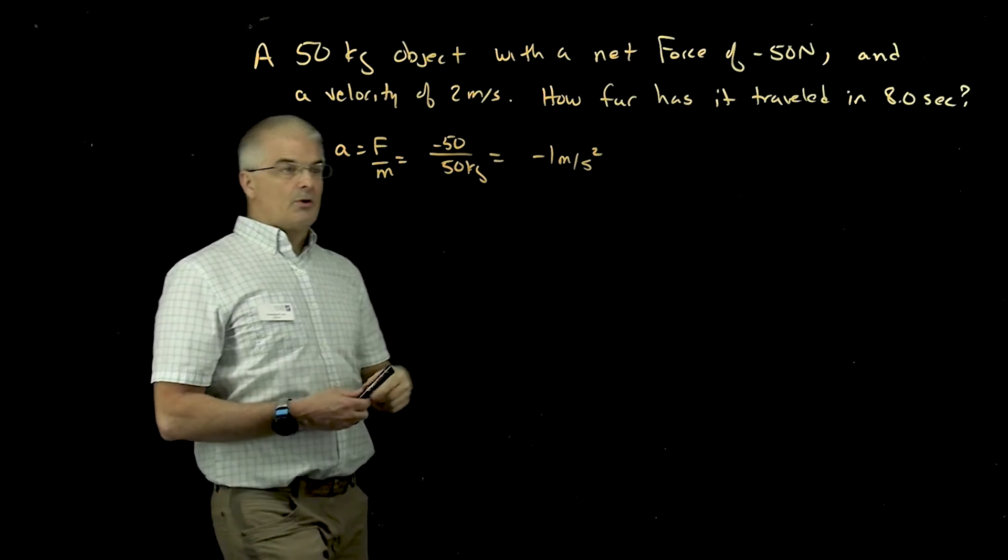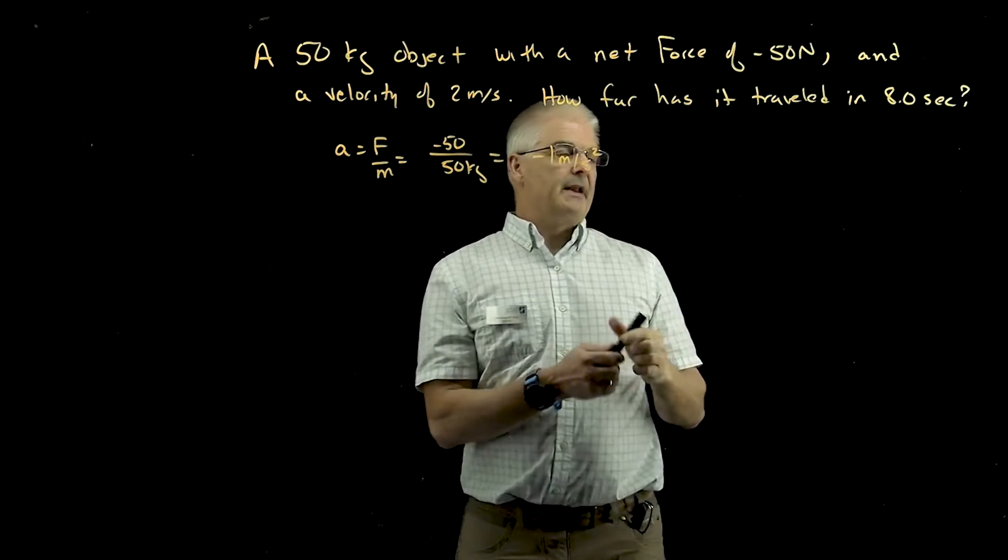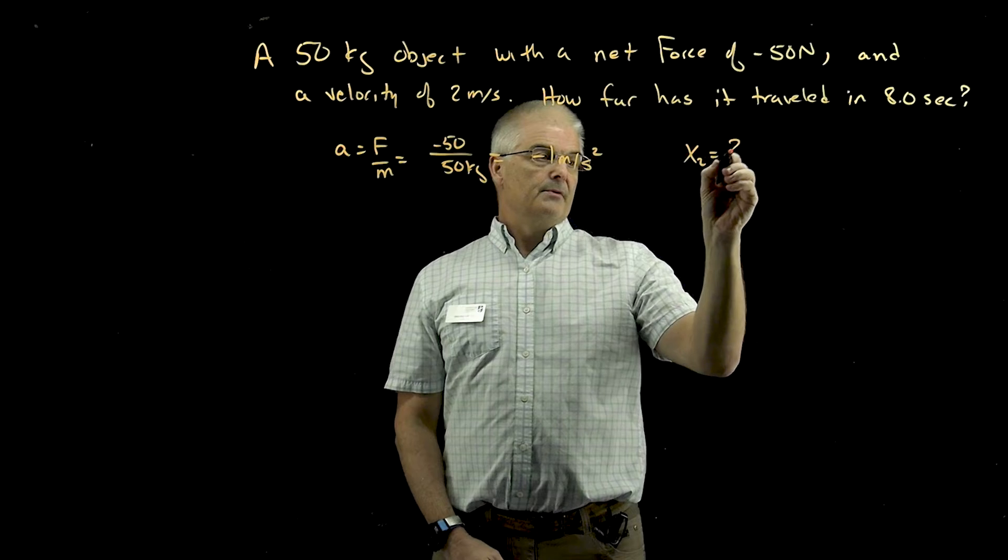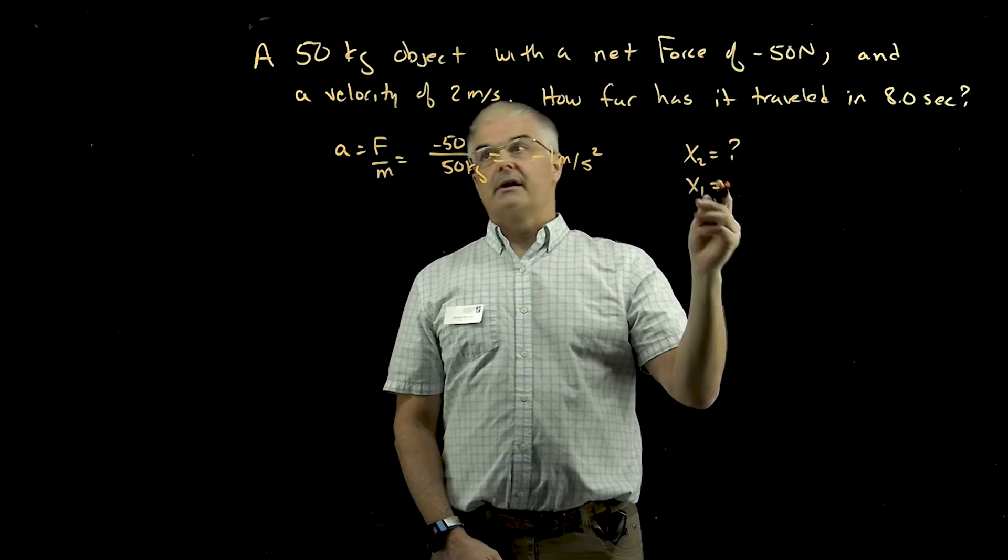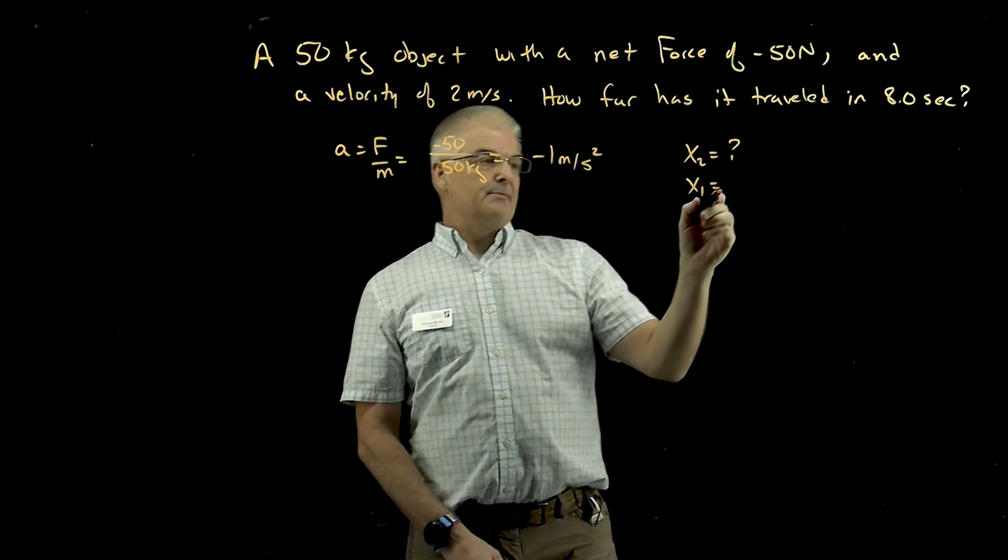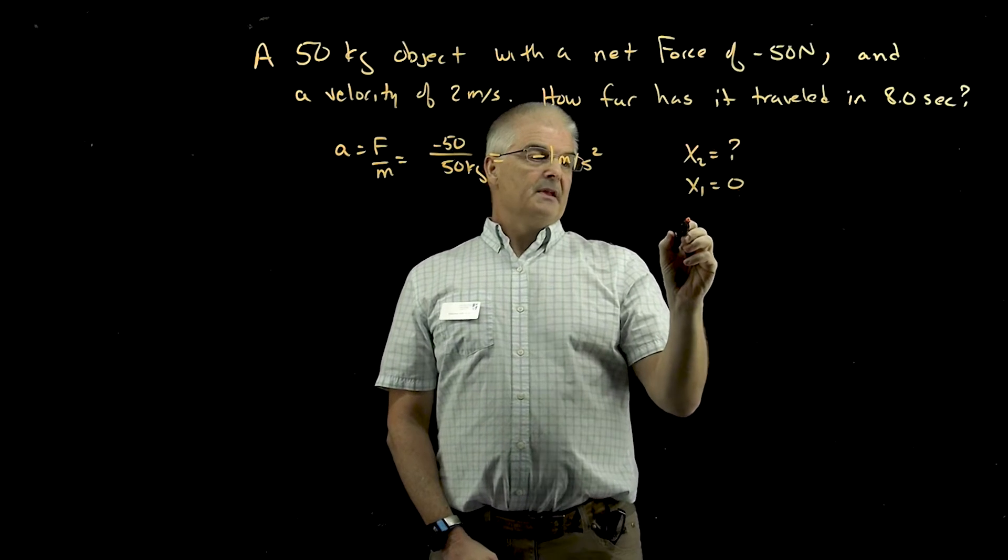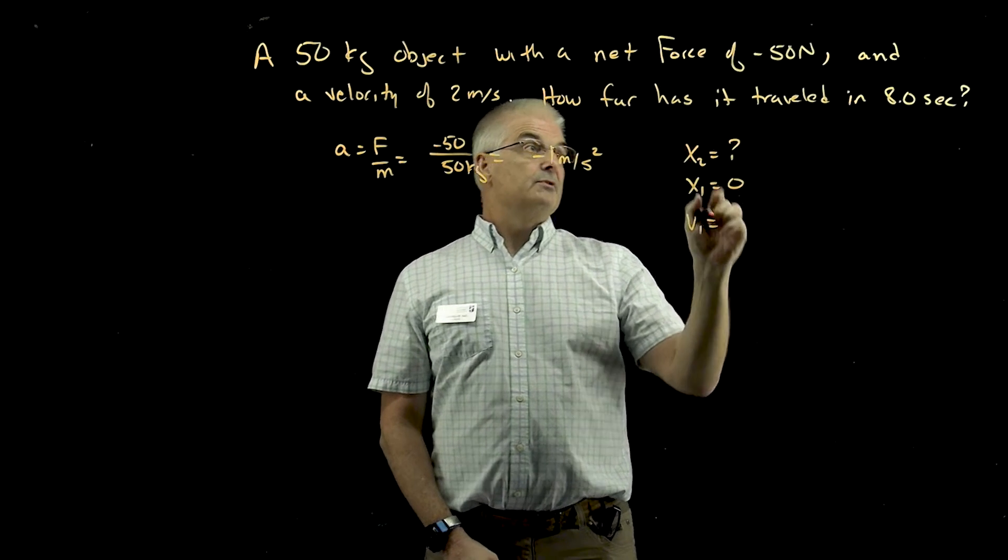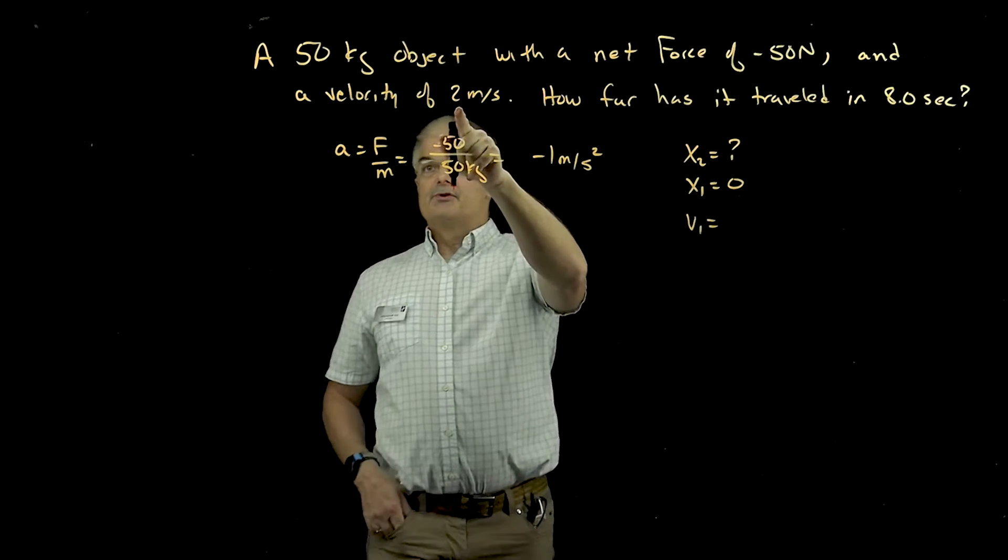So now we're going to do a kinematics equation, right? So we've got X2, we don't know. X1 is starting at, we'll say, object at 0. That makes sense, right? And then we've got velocity 1. Now we do know that. What is the velocity? 2 meters per second. Velocity 2, we don't know.